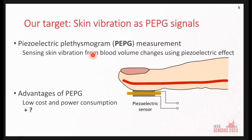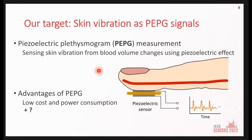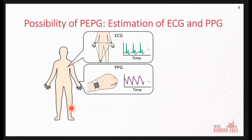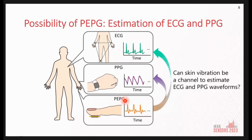We target skin vibration PEPG signals. PEPG is piezoelectric plethysmogram, which can be recorded using piezoelectric effects on skin vibration from blood volume changes. PEPG has advantages of low cost and low power consumption. Additionally, PEPG will have more advantages if the signal provides the same waveform as ECG and PPG waveforms based on the relationship between cardiovascular signals. We assume the possibility of PEPG signals to estimate ECG and PPG signal waveforms, where ECG and PPG waveforms used for biomedical and security applications may be estimated from skin vibration PEPG signals as non-general channels.